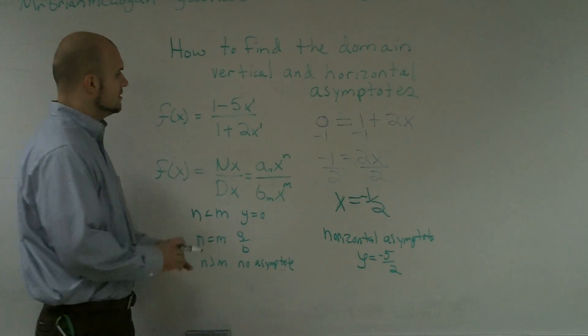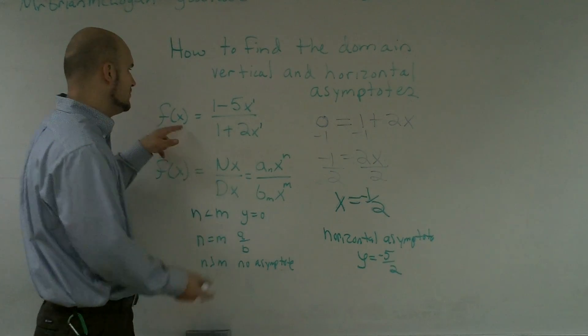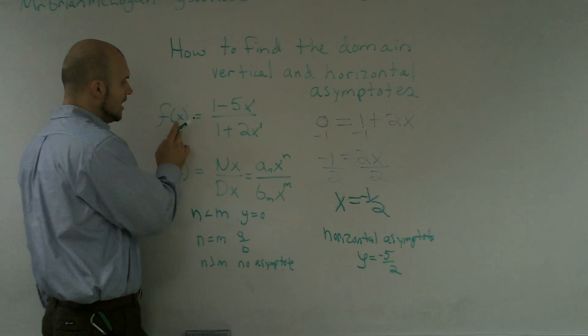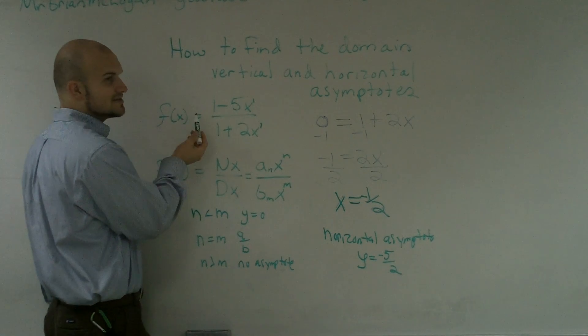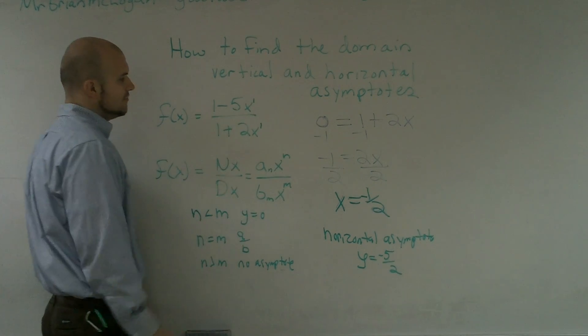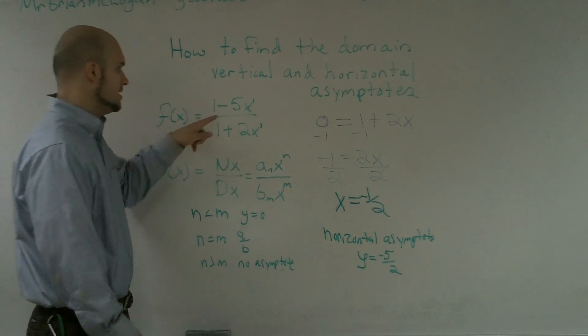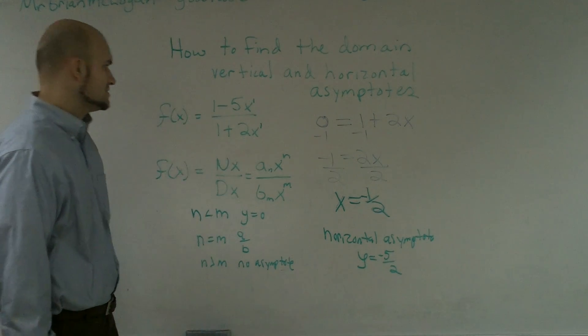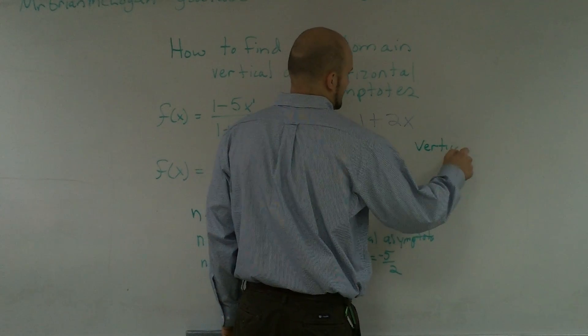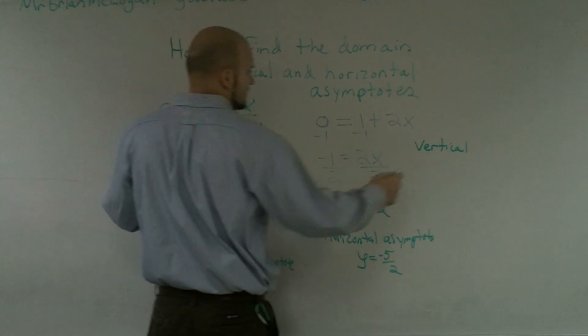To find the vertical asymptote, you just need to determine when x is going to equal zero. So I just need to solve for when my numerator is equal to zero.